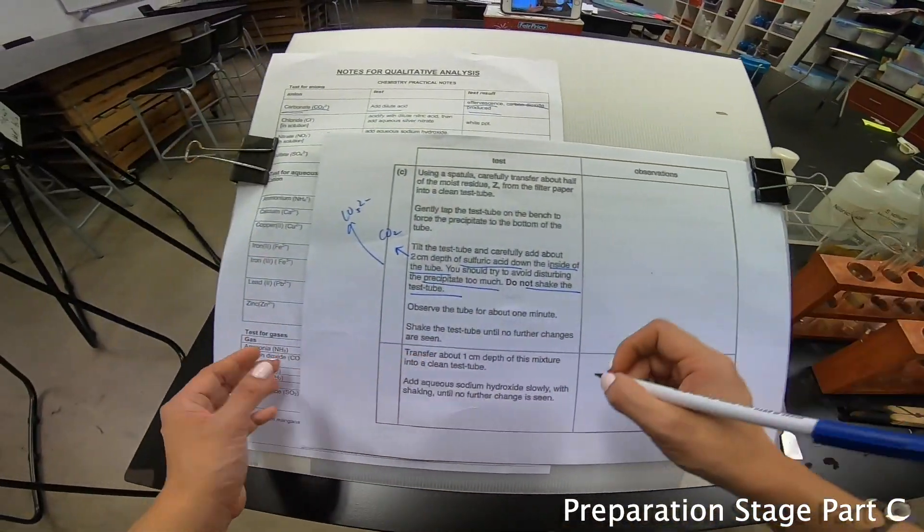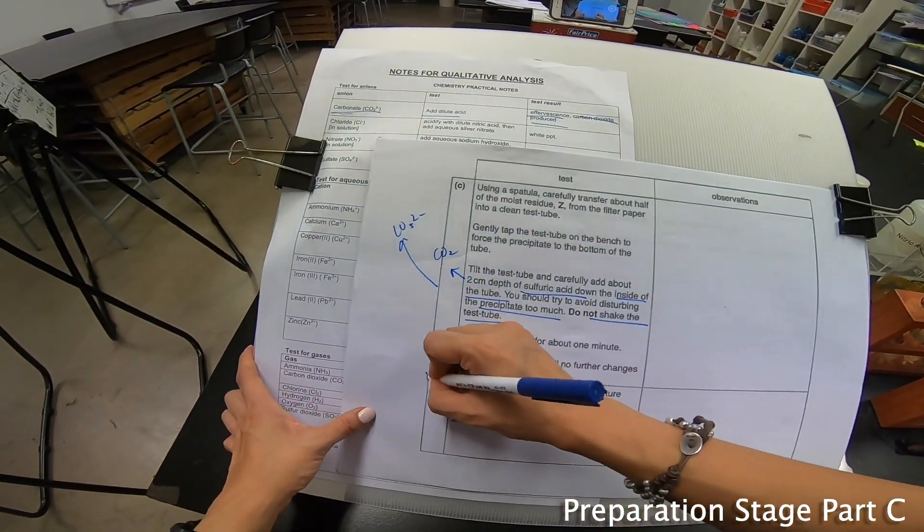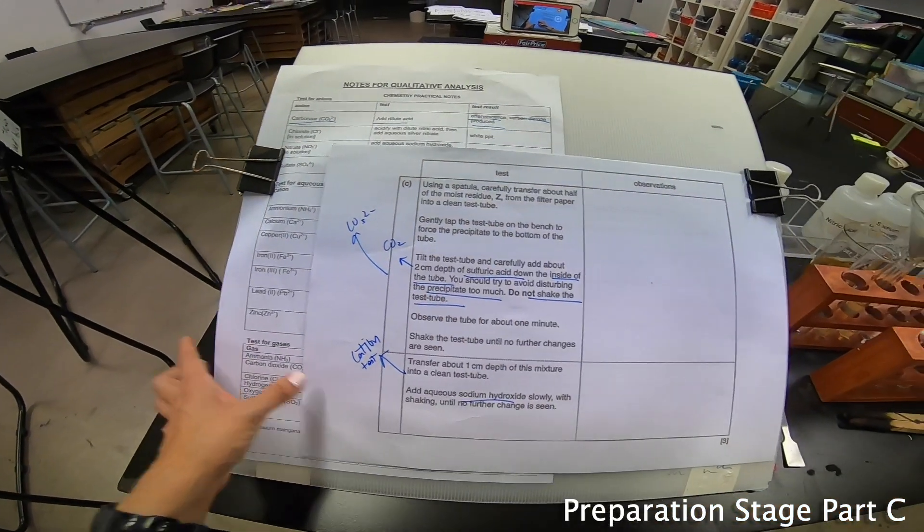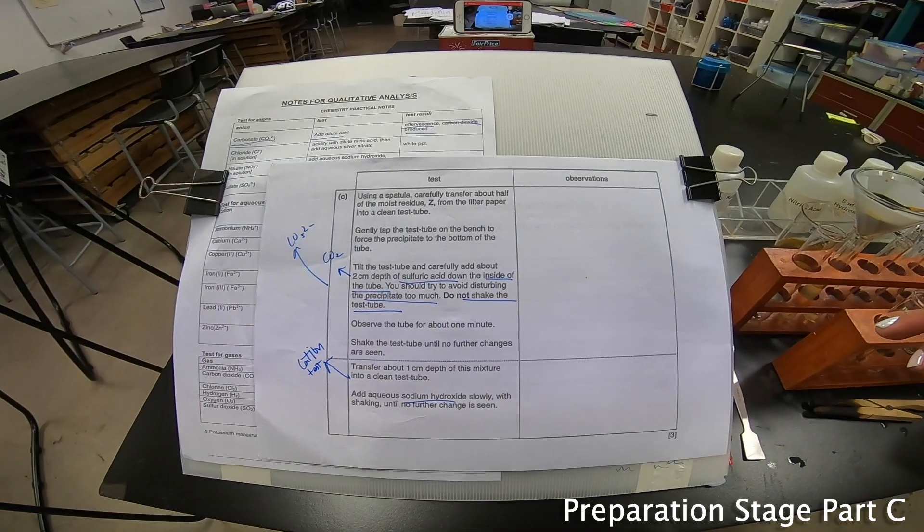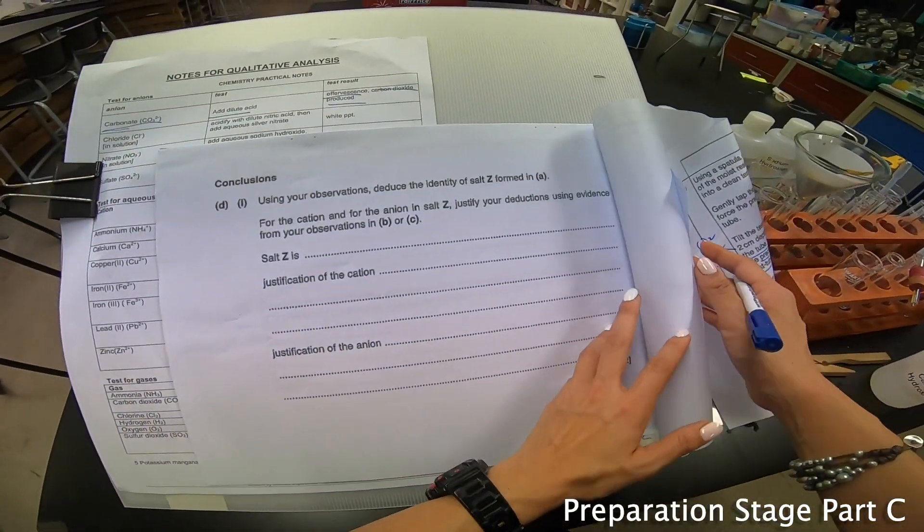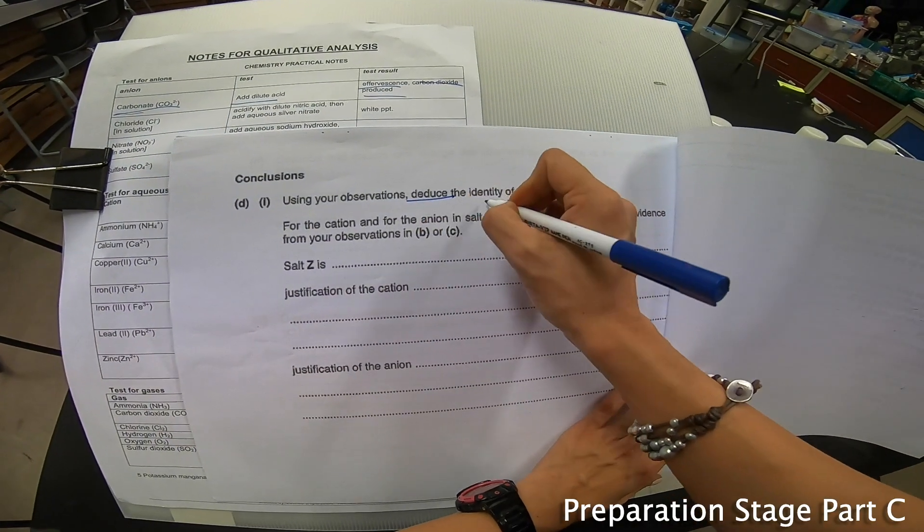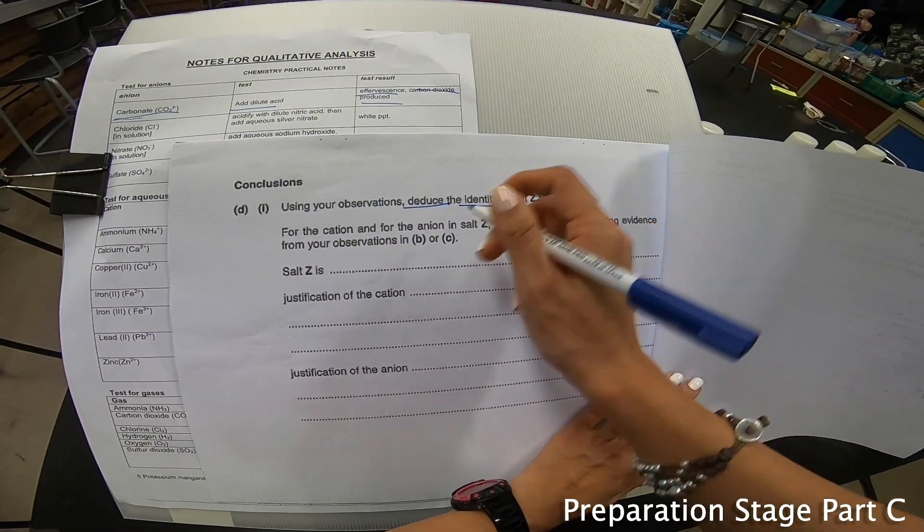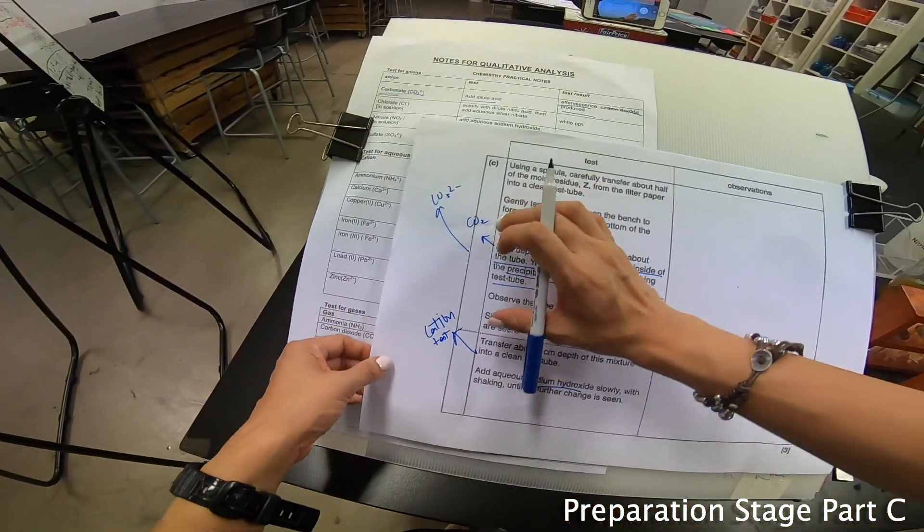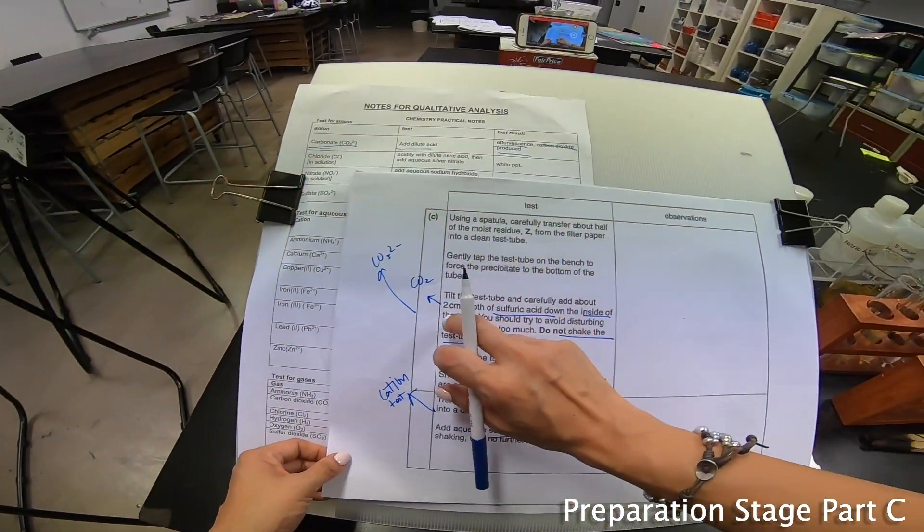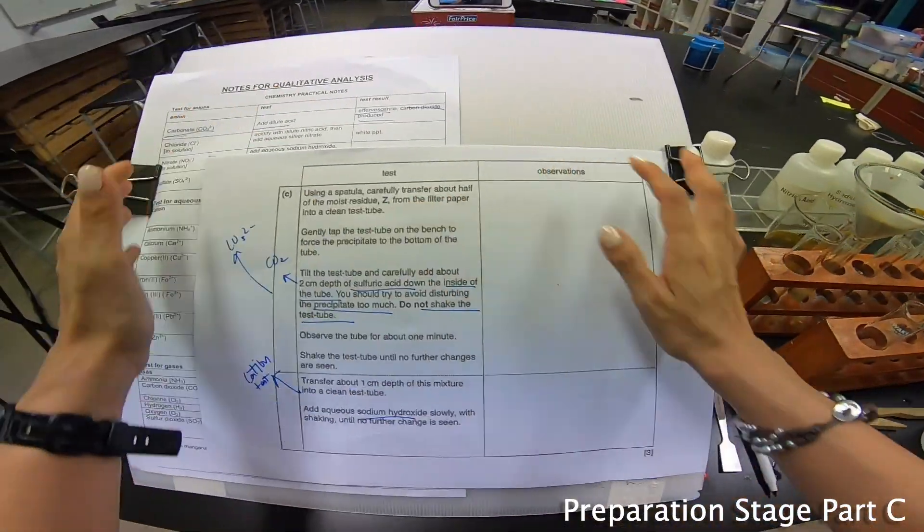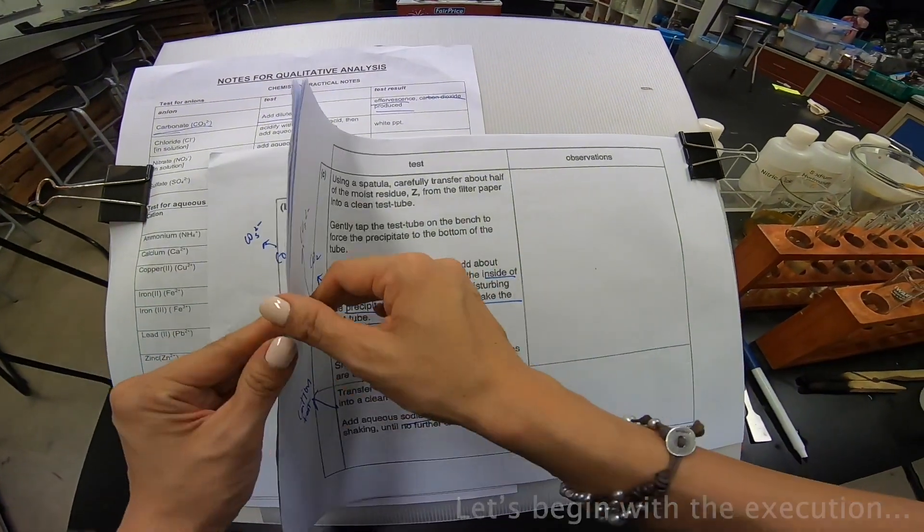Now I noticed that they add sodium hydroxide. This is actually a cation test. I'm going to leave it as it is now. Let's take a look at the back at what you're looking for. True enough, you're trying to deduce the identity of Z and you have to know the cation and the anion. So let's start since we have already prepared everything. Let's start the execution.